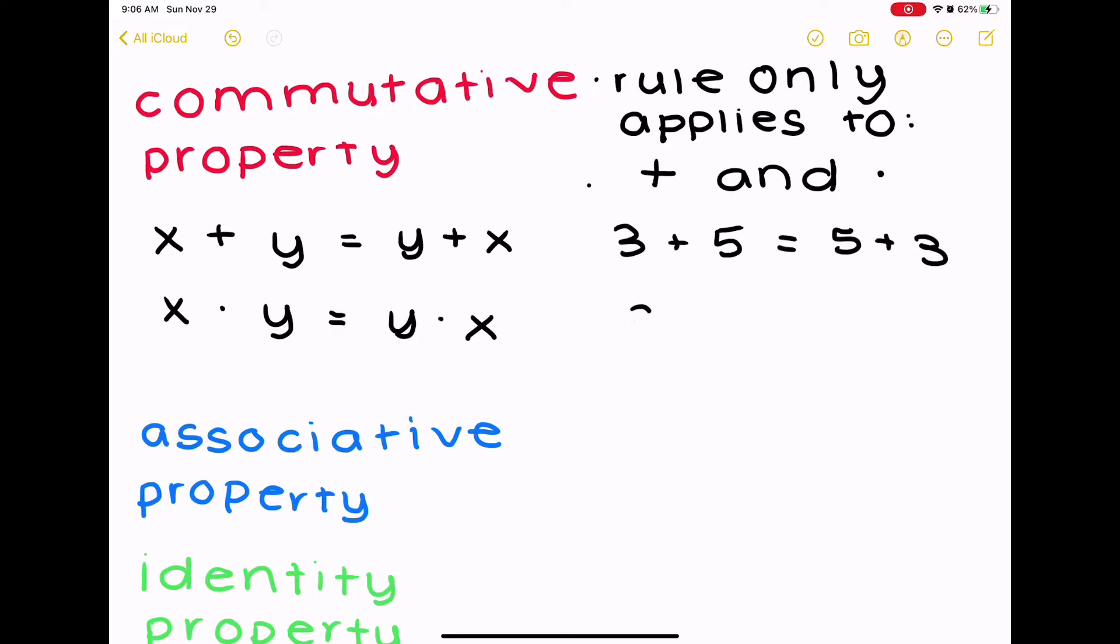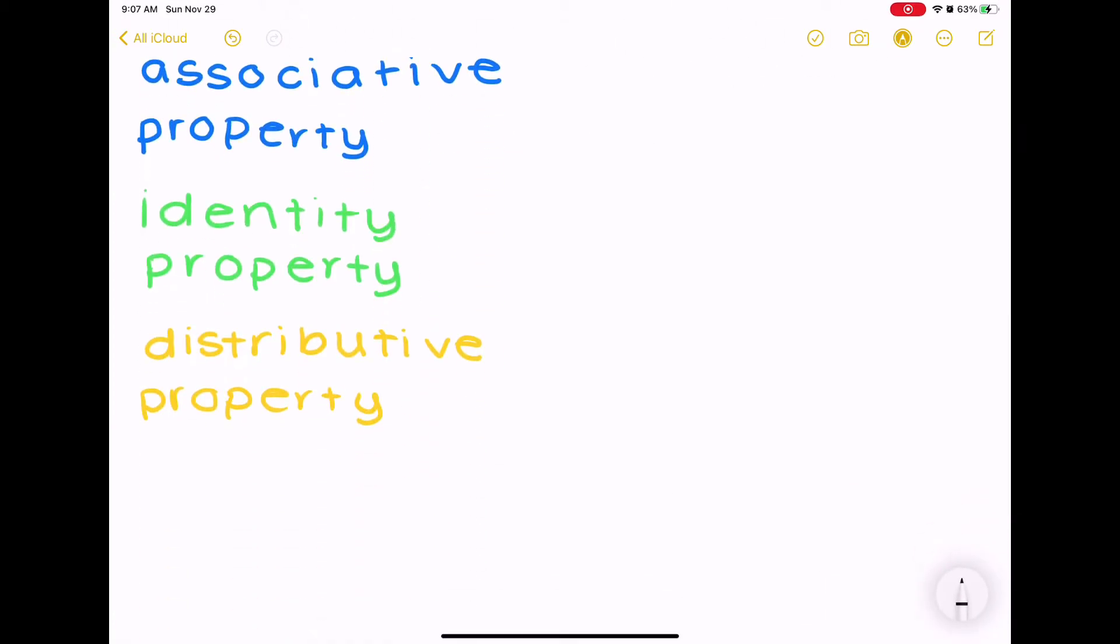Now, 3 plus 5 is equal to 5 plus 3. Well, those are both 8, and 3 times 5 and 5 times 3 are both 15. But if we're doing 5 minus 3, well that's not equal to 3 minus 5, because that's negative 2, not 2. Or 15 divided by 3 versus 3 divided by 15. Well, those are not equal, which is why the commutative property only applies to addition and multiplication.